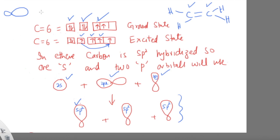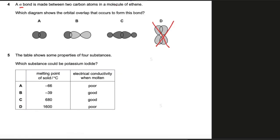This is the first carbon's sp2 hybrid orbital and this is the second carbon's sp2 hybrid orbital, so this would be the answer: option C. Option B is wrong because it shows an s orbital overlapping with a p orbital. Option A is wrong because both orbitals are s orbitals. In ethene, the two carbon atoms form a sigma bond using sp2 hybrid orbitals.